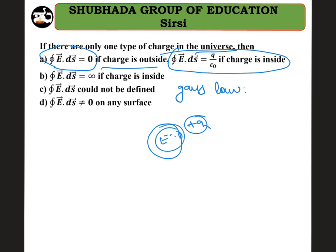If the charge is present outside any closed surface, the electric field contribution through that surface is zero. If the charge is inside the closed loop, the closed integral of electric field equals (1/ε₀) times the charge enclosed by that surface. That's the statement of Gauss's law in electrostatics, and that is the right answer.